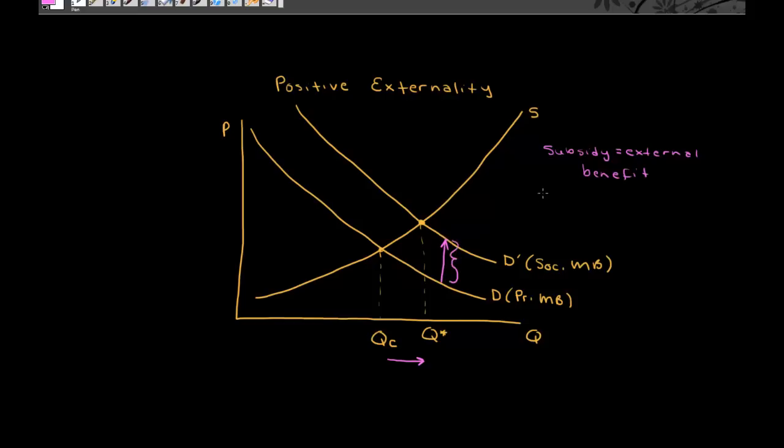Like we said, if we're setting that subsidy equal to the per-unit external benefit, now the consumers, when deciding whether to buy more of this product or not, more flu vaccinations for instance, the consumer will be willing to pay the producer more for each and every flu shot that they receive. As a result, we'll reach the new market equilibrium, which will get us to Q-star units.